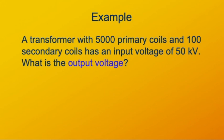We're given the number of loops in the primary and secondary, so 5000 primary, 100 secondary. The voltage ratio equals the loop ratio, so we just need to solve for the secondary voltage.